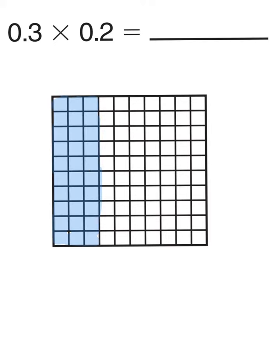Now that we have our 3 tenths shaded blue, we are going to shade our 2 tenths. This time we will count down 2 rows — 1, 2 — and we will shade those 2 rows of tenths red.